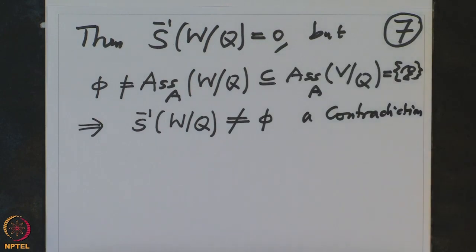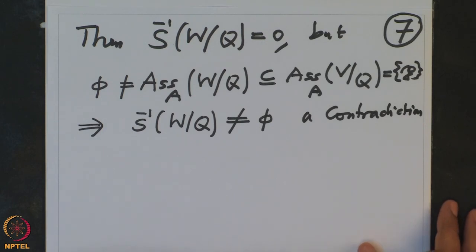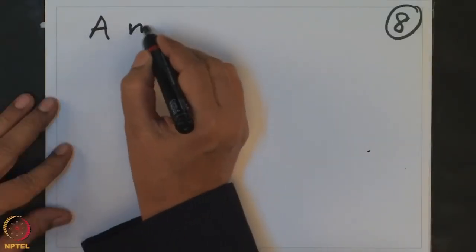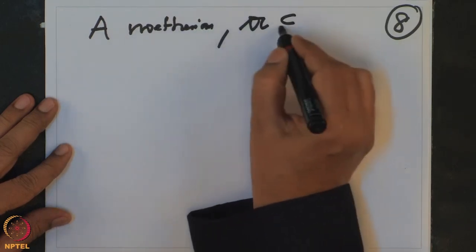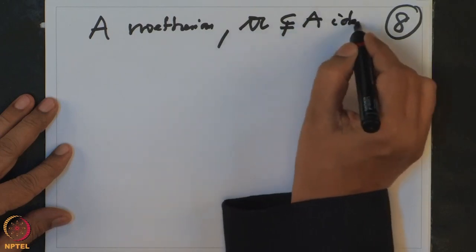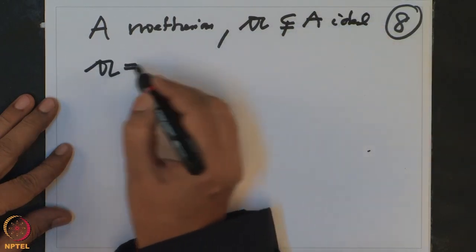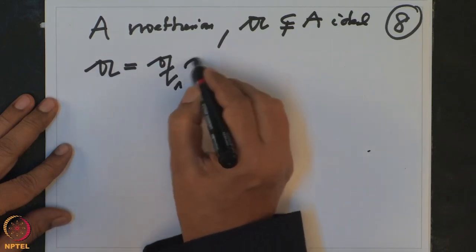This proves the proposition. What we proved is that the primary components corresponding to the minimal primes are uniquely determined. Now let us take a particular case which is very important. Suppose we have a Noetherian ring A and a proper ideal in A. Then we know that A has a primary decomposition with primary components Q_1 to Q_r.